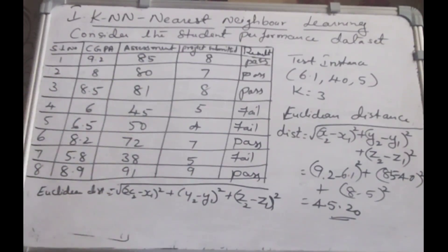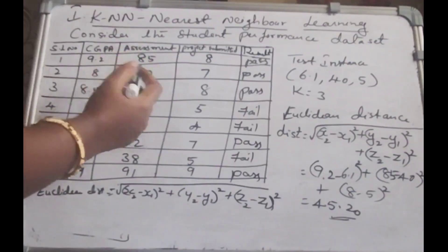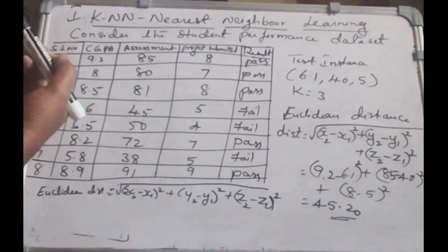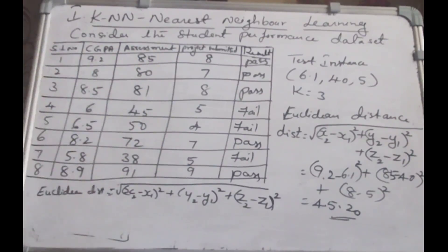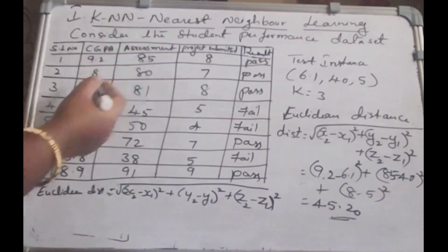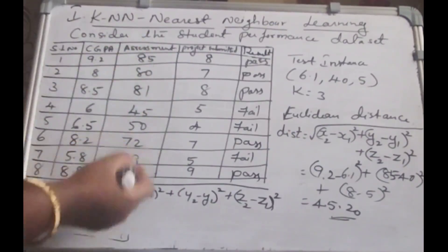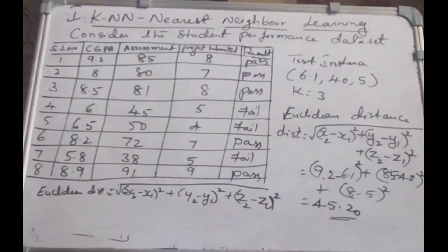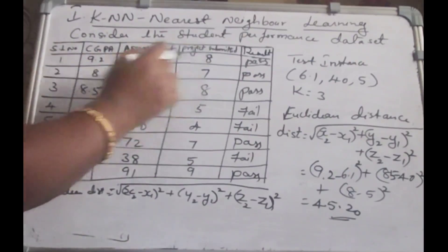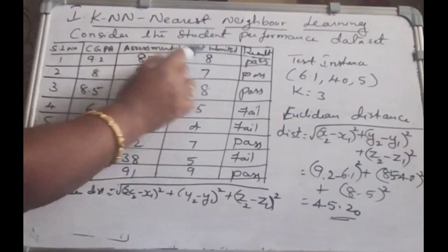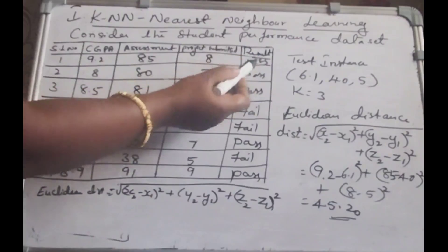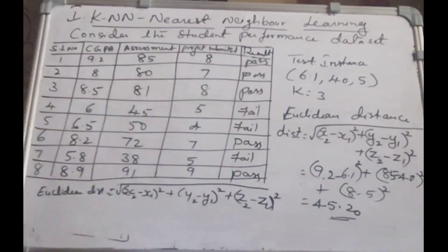Here we know what K is. The algorithm will classify a new instance by determining the K most similar instances and summarize the output of those K instances. We have been given 8 instances in this sample dataset with 3 attribute values — 3 independent variables: CGPA, assessment, and project — and 1 dependent variable, which is the output result. The result can be pass or fail.